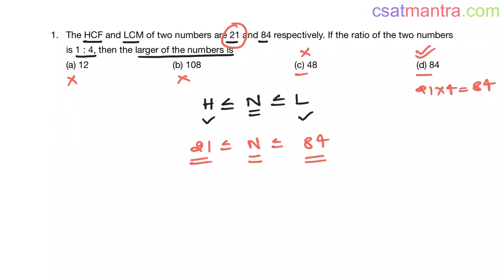You can solve this using the method which we have learned yesterday. You have the HCF H, and two numbers are in the ratio X is to Y, where X and Y are co-primes. In that case, you can write the two numbers as H times X, H times Y.